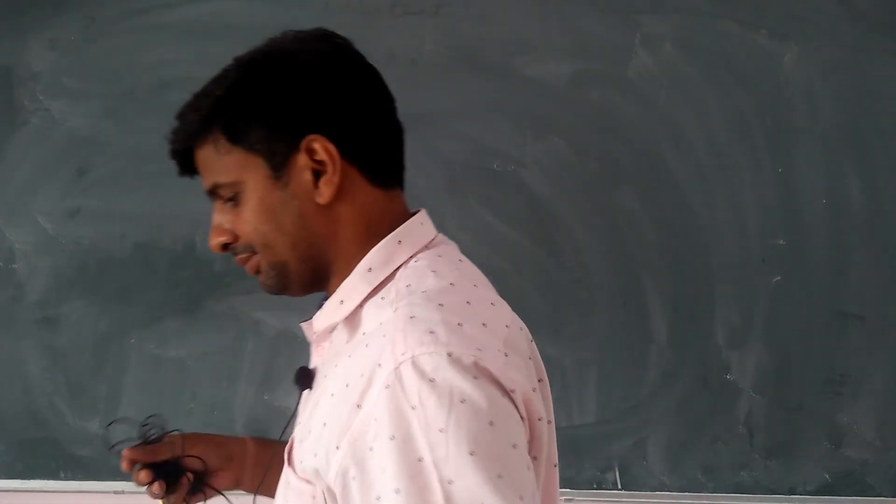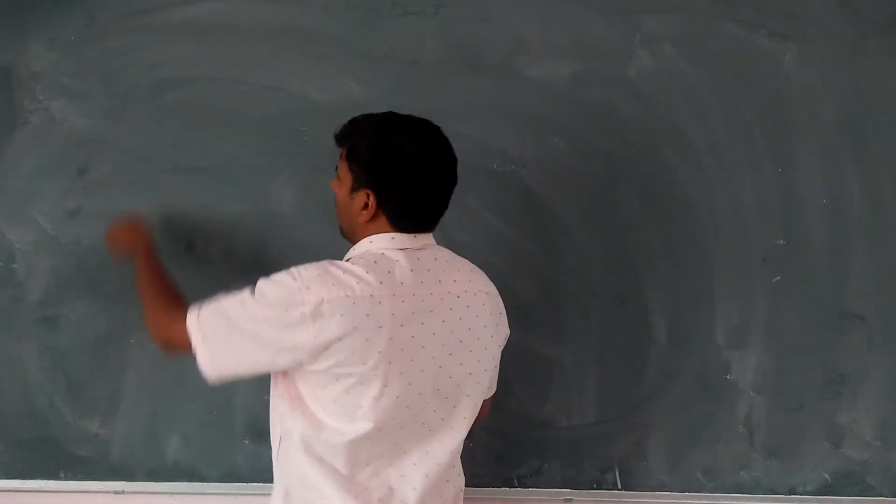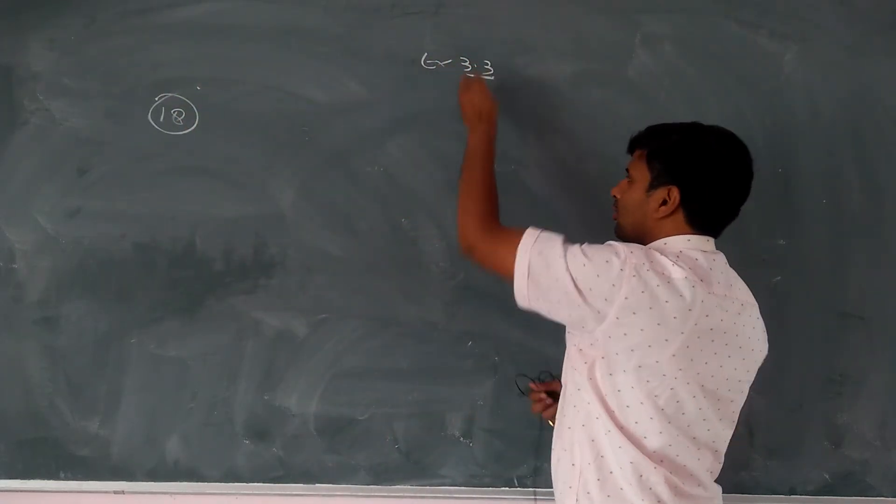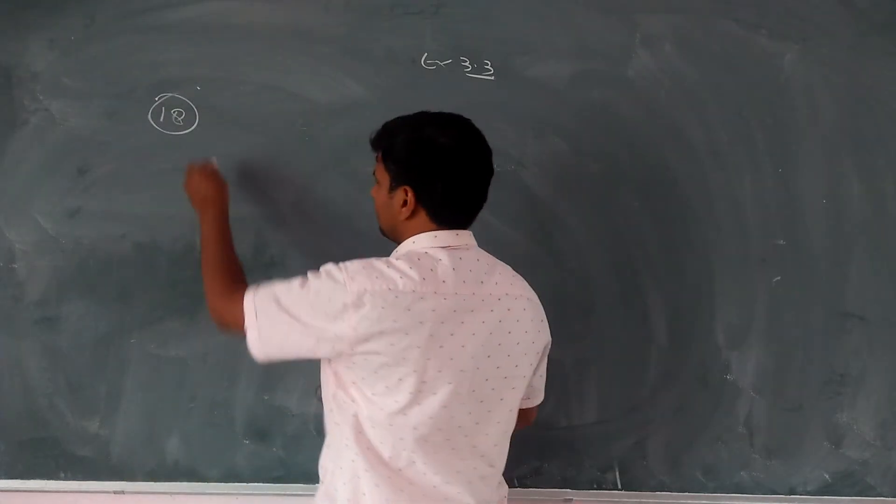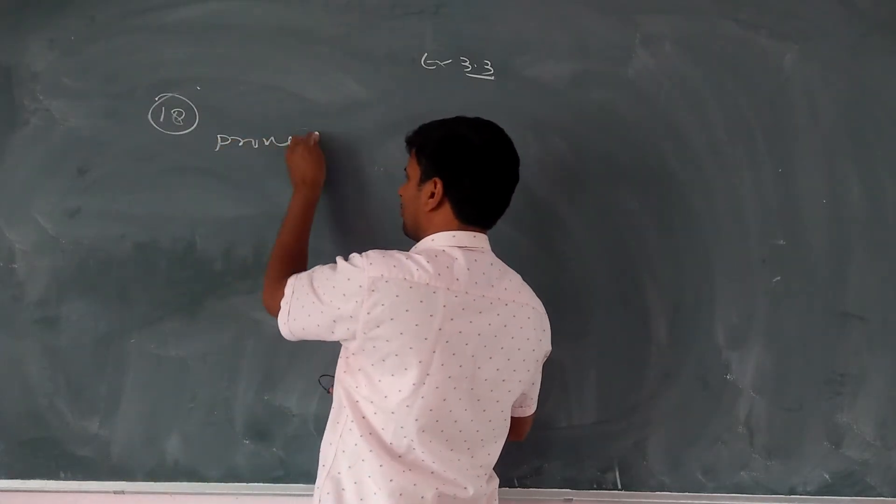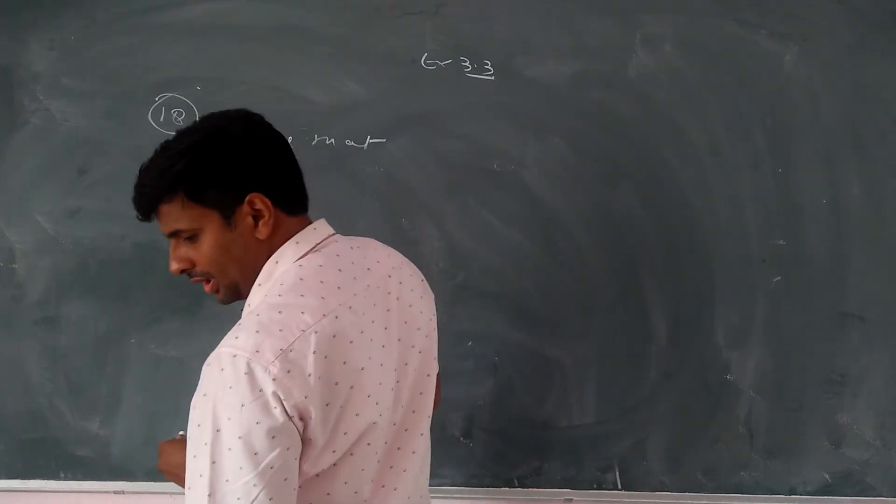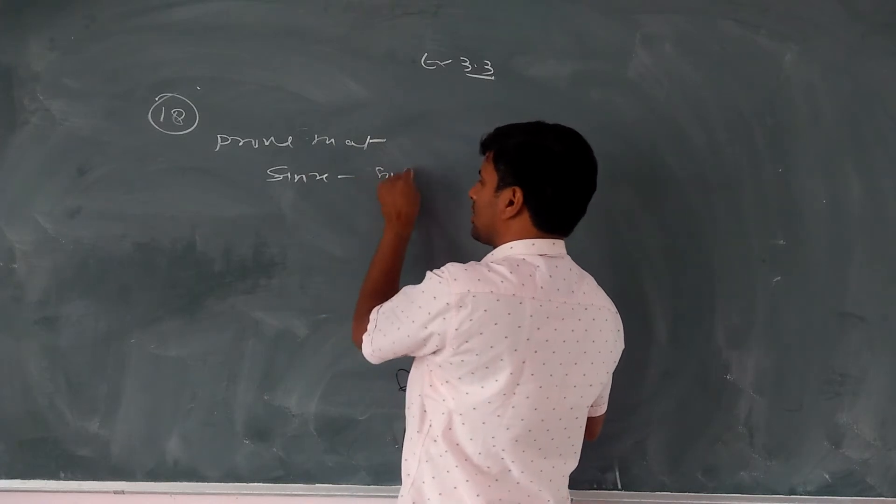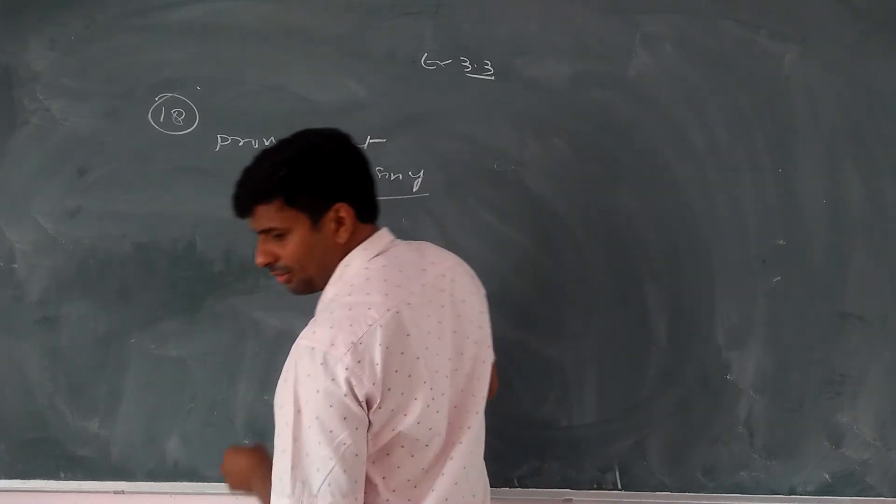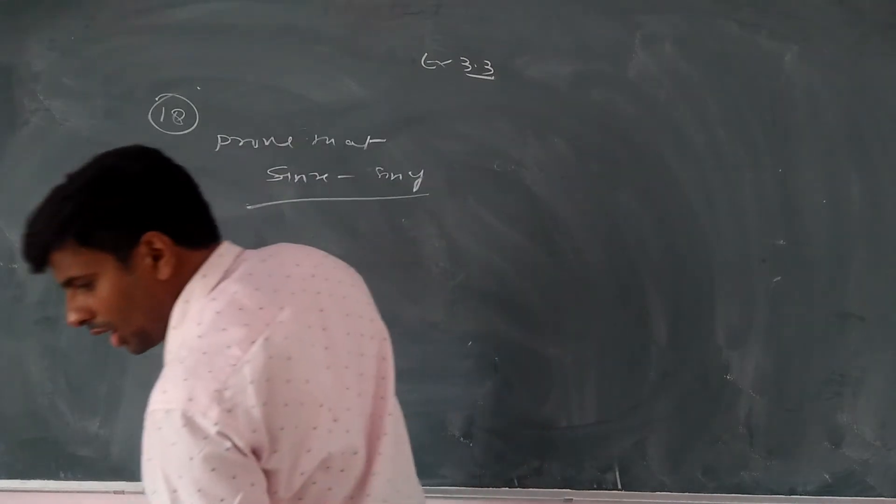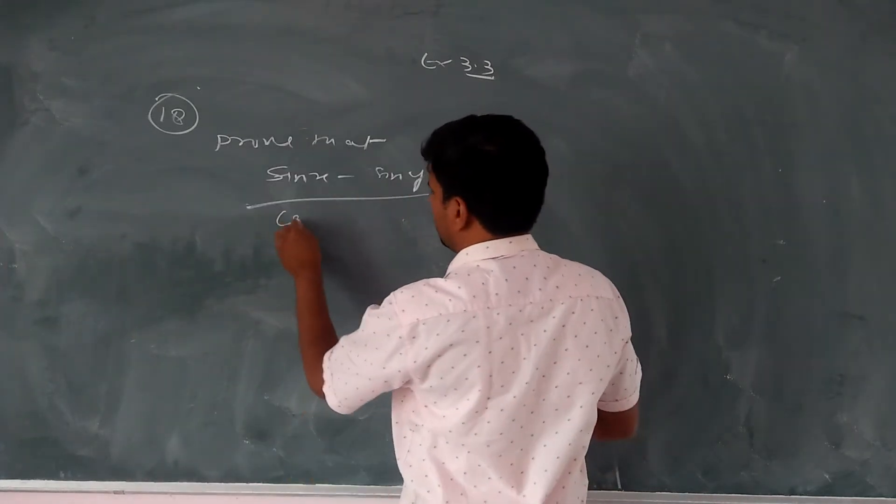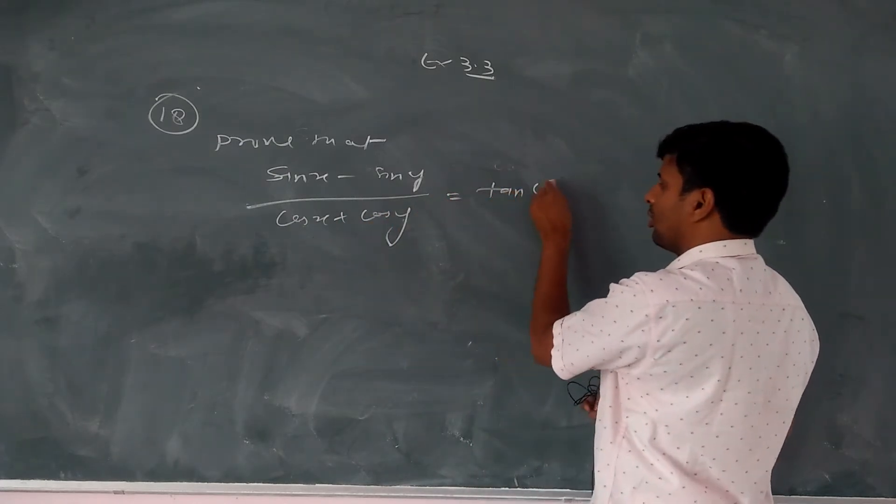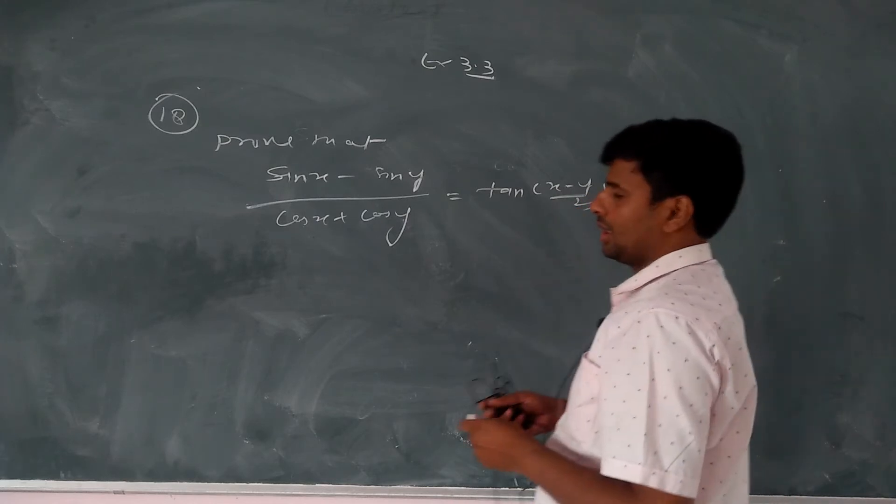Okay, we will see question number 18, Exercise 3.3. Let us prove that sine minus sine. We will see. Here are 4,6 plus 4.3. And then we will see.